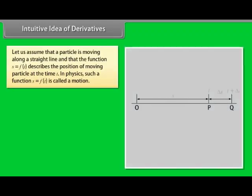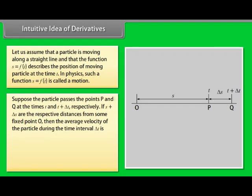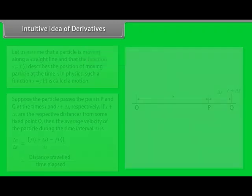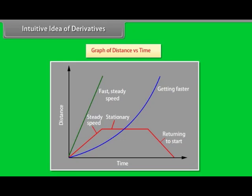Intuitive idea of derivatives: Let us assume that a particle is moving along a straight line, and that the function s = f(t) describes the position of the moving particle at time t. In physics, such a function is called a motion. Suppose the particle passes points P and Q at times t and t+Δt respectively. If s+Δs are the respective distances from some fixed point O, then the average velocity during the time interval Δt is Δs/Δt = [f(t+Δt) − f(t)] / Δt = distance travelled / time elapsed.